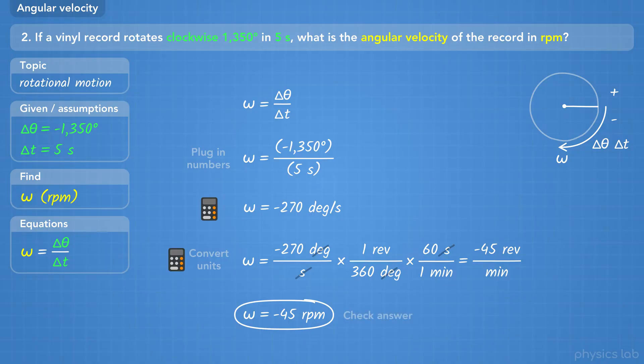Does that make sense based on the problem? We're rotating in the clockwise direction, which is negative, so it makes sense that our angular velocity is negative.